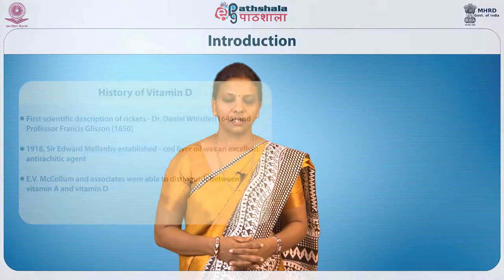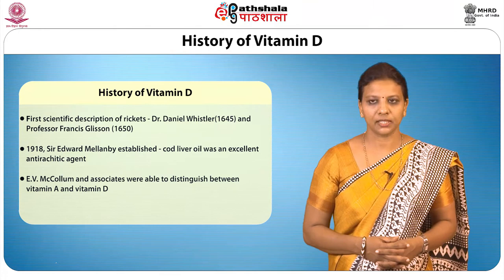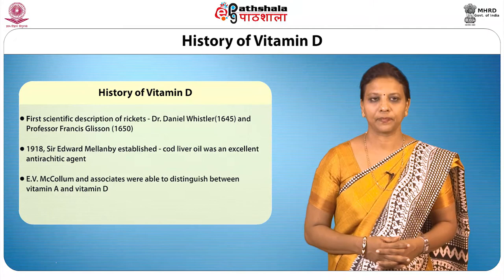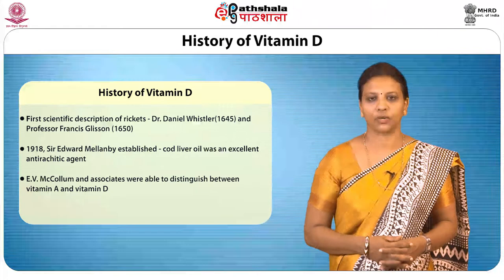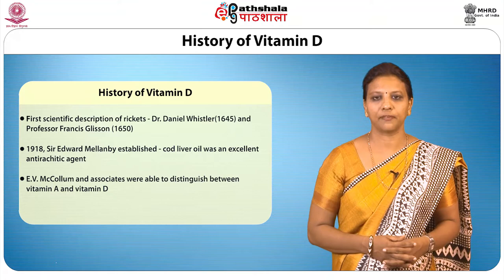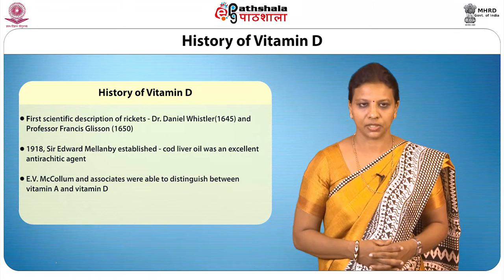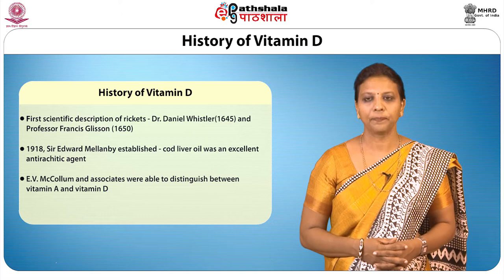The first scientific description of vitamin D deficiency, rickets, was provided in the 17th century by Dr. Daniel Whistler in 1645 and Professor Francis Glisson in 1650. It was in 1918 that Sir Edward Mellenby, working with dogs raised exclusively indoors in the absence of sunlight or UV light, established that the bone disease rickets was caused by a deficiency of a trace component present in the diet. He also established that cod liver oil was an excellent anti-rachitic agent. Subsequently, E.V. McCollum and associates observed that by bubbling oxygen through a preparation of the fat-soluble vitamin, they were able to distinguish between vitamin A, which was inactivated, and vitamin D, which retained activity.